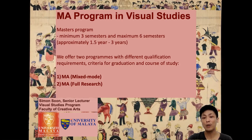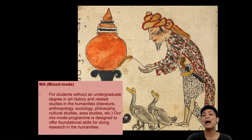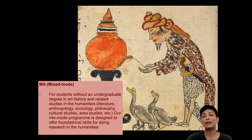These are the MA mixed mode and the MA full research. For students without an undergraduate degree in art history or related fields of study in the humanities — such as literature, anthropology, sociology, philosophy, cultural studies, etc. — our mixed mode program is designed to offer you foundational skills for doing research in the humanities. In general, students in the fine arts or studio degree are encouraged to enroll in the mixed mode program.